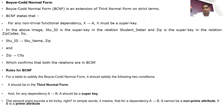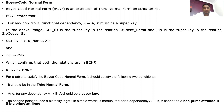In a relation, non-primary attributes should not depend on other non-primary attributes — remove such dependencies to achieve Third Normal Form. Now, the extension of Third Normal Form is 3.5NF, or simply called Boyce-Codd Normal Form (BCNF). It is an extension of Third Normal Form on stricter terms.